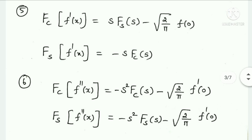The fifth property: Fourier cosine transform of f′(x) equals S times the Fourier sine transform of F(S) minus √(2/π) times f(0). Fourier sine transform of f′(x) equals minus S times the Fourier cosine transform of F(S).